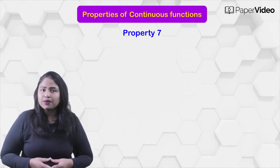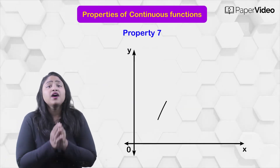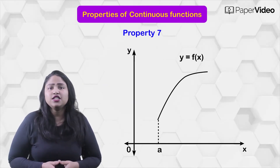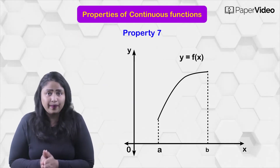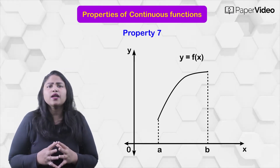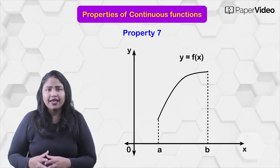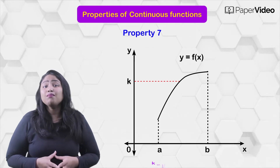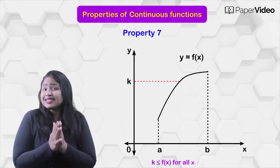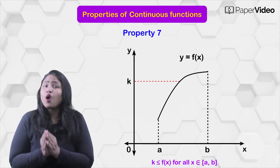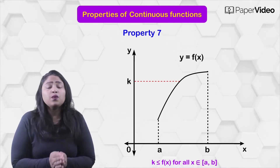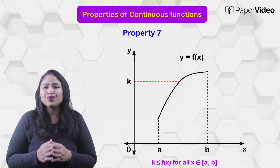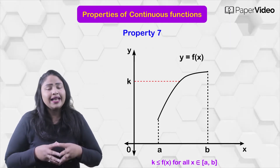According to the seventh property, if a function f is continuous on a closed interval [a, b], then it is bounded on [a, b]. This means that there exists a real number k such that k is less than or equal to f of x for all x belonging to the closed interval [a, b].